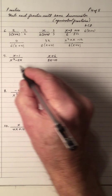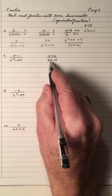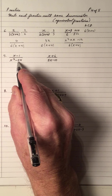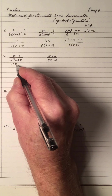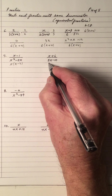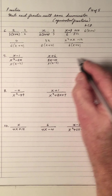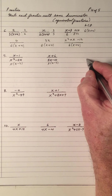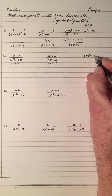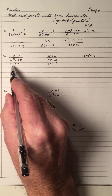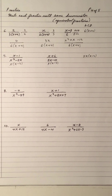Number 7, the LCD. The LCD as written would be x squared minus 2x times 5x minus 10, but if we factor it, we get x outside of x minus 2, and 5 outside of x minus 2. So the LCD for these two — I put the number first — I see a 5, an x, and an x minus 2. So 5x times x minus 2 is the LCD.